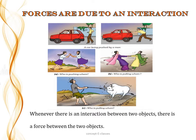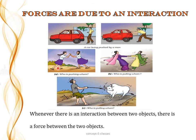When does force come to play? Whenever there is an interaction between two objects, there is a force between them. In the first textbook image, a man stands behind the car and the car doesn't move as there is no interaction. In the second image, the man begins to push the car and it moves in the direction of the applied force. Similarly, girls pushing or pulling each other, and a man and a cow, all show that at least two objects must interact for a force to come to play.